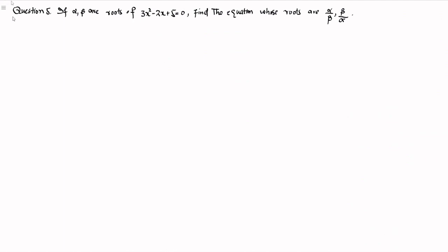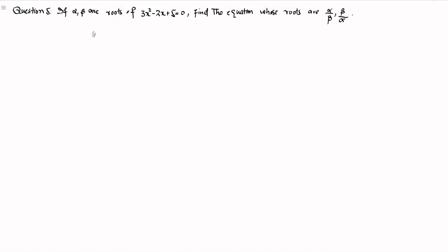Hello everyone, welcome to my channel LearnMyth. In this session we are given that alpha and beta are roots of 3x squared minus 2x plus 5 is equal to 0, and we have to find a quadratic equation whose roots are alpha by beta and beta by alpha.